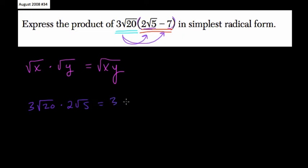Because 3 times the square root of 20 times 2 times the square root of 5, think of that as 3 radical 20 times 2 times radical 5. If you reorder everything, what do we get? 3 times 2 times radical 20 times radical 5.